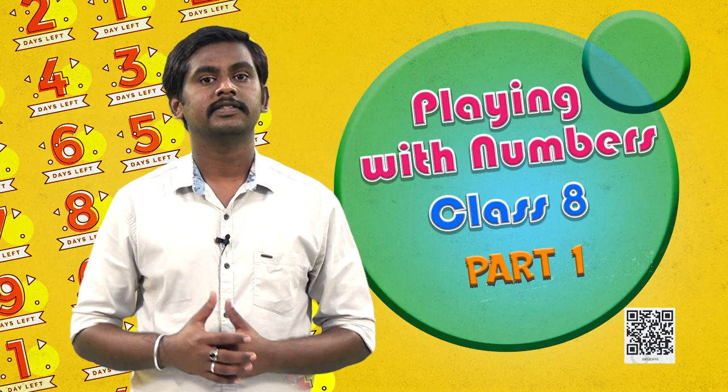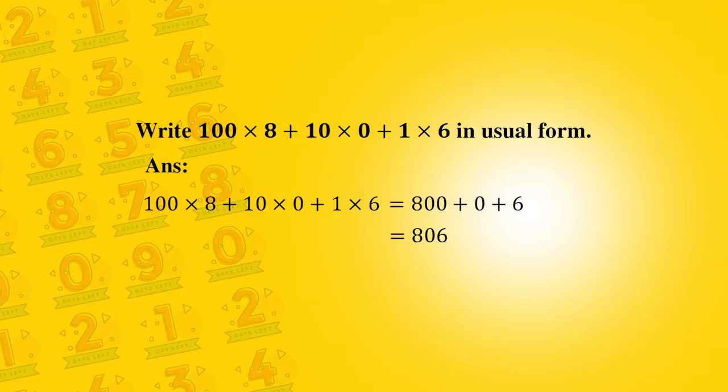We observe that 100 times 8 plus 10 times 0 plus 1 times 6 is equal to 800 plus 0 plus 6. So the sum is eight hundred and six.